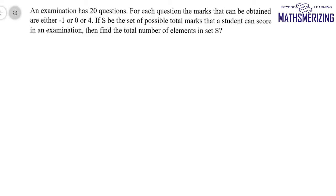An interesting question: an examination has 20 questions. For each question, the marks that can be obtained are either minus 1, 0, or 4. If S is the set of possible total marks that a student can score in the examination, we need to find the total number of elements in set S — that is, what are all the possibilities for the total marks the student can score?